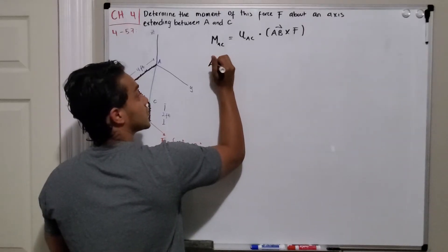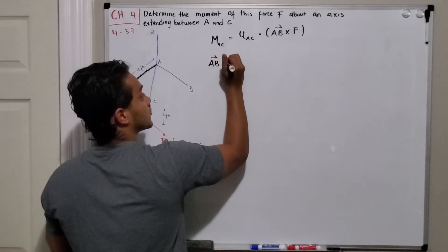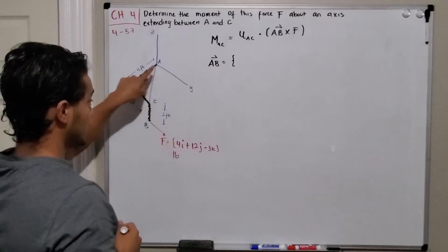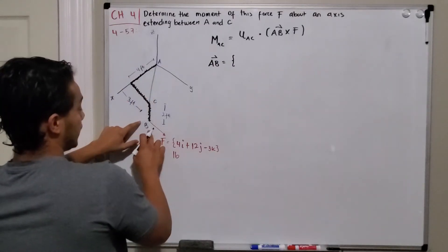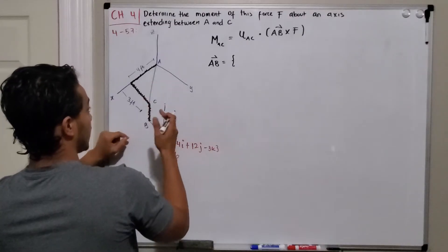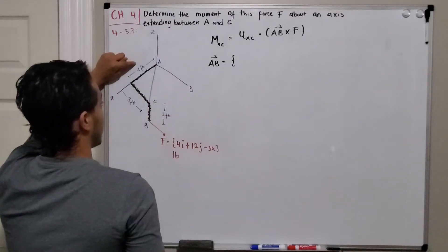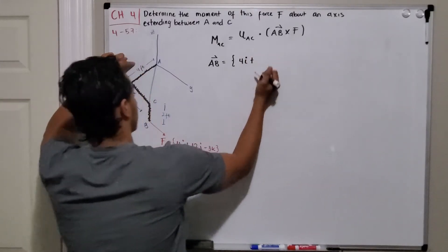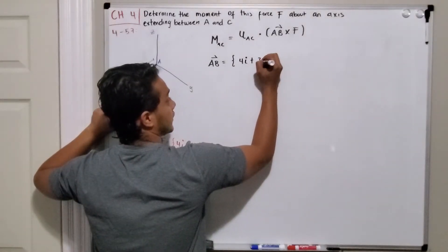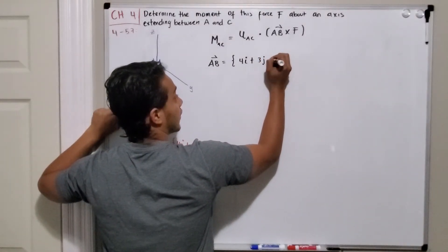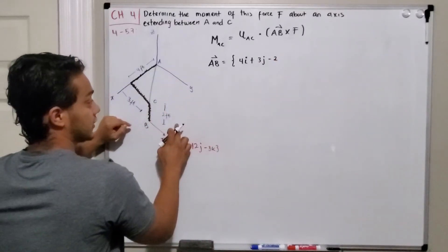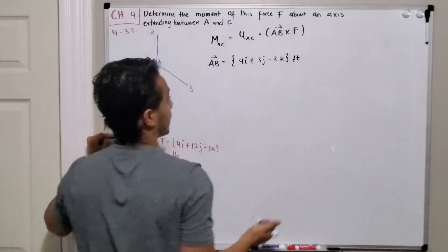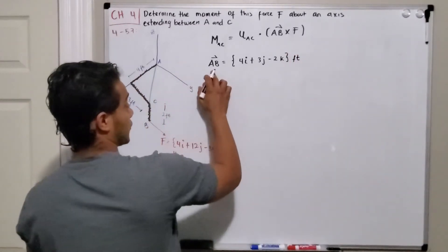Let's find vector AB. We know AB equals B minus A. Since A is the origin, all coordinates are B minus zero. So in the x direction we have four feet, in the j direction we have three feet, and in the k direction we have negative two feet. All units are in feet.